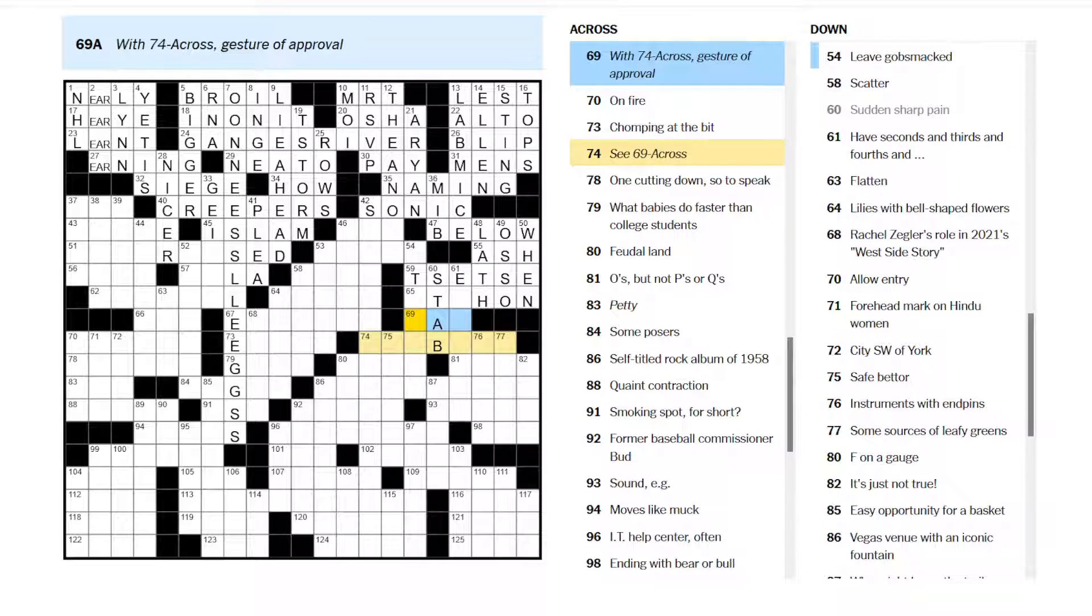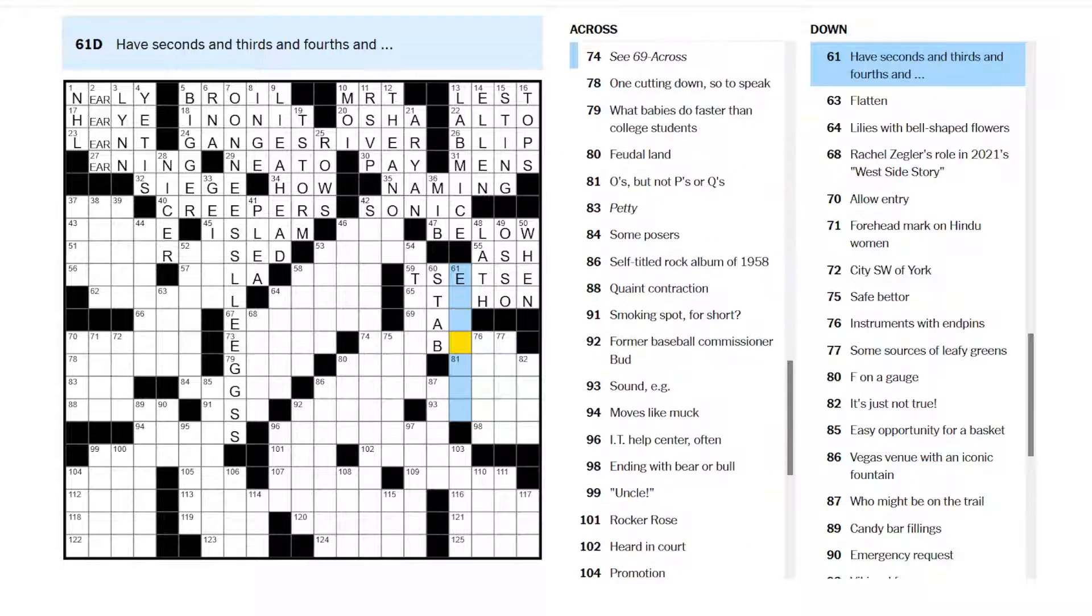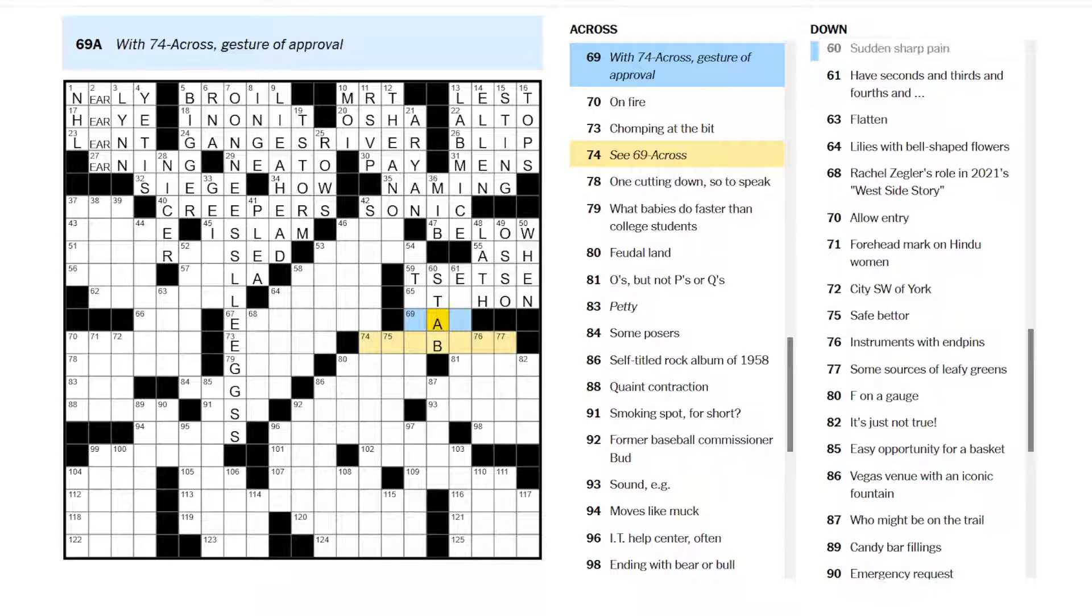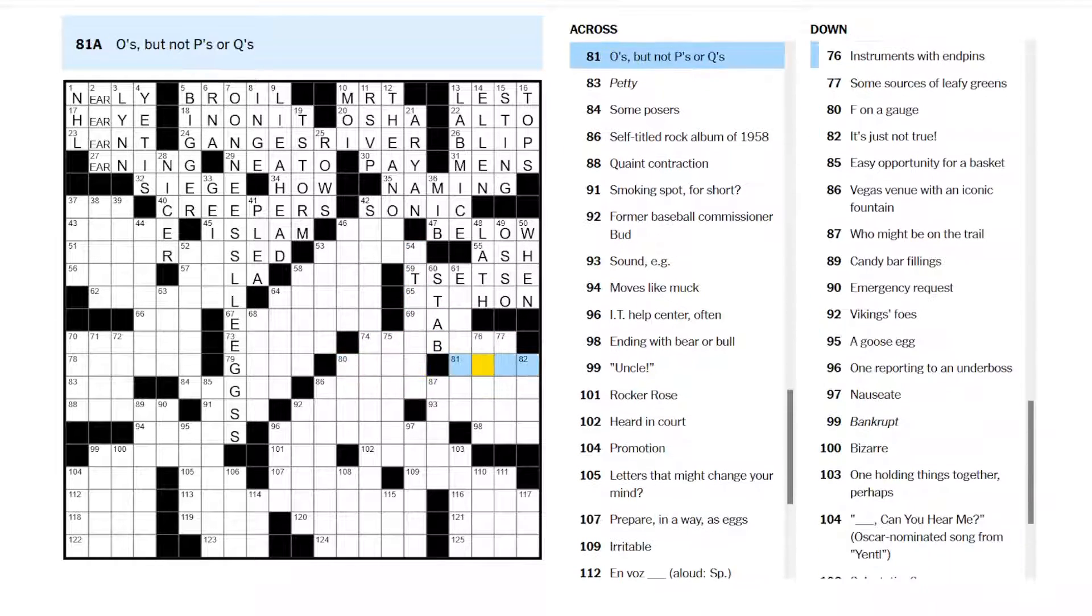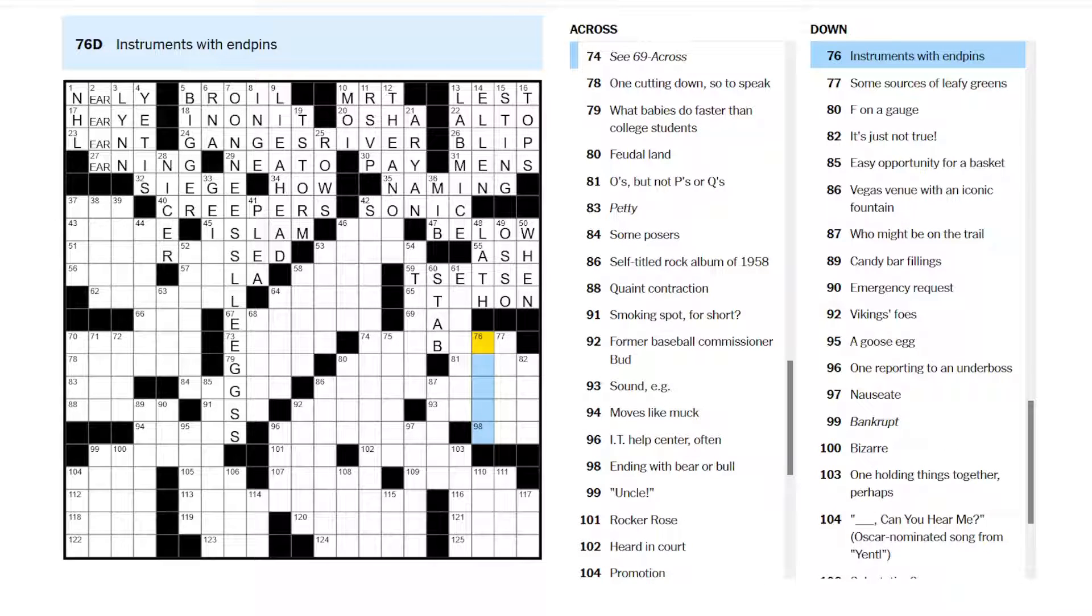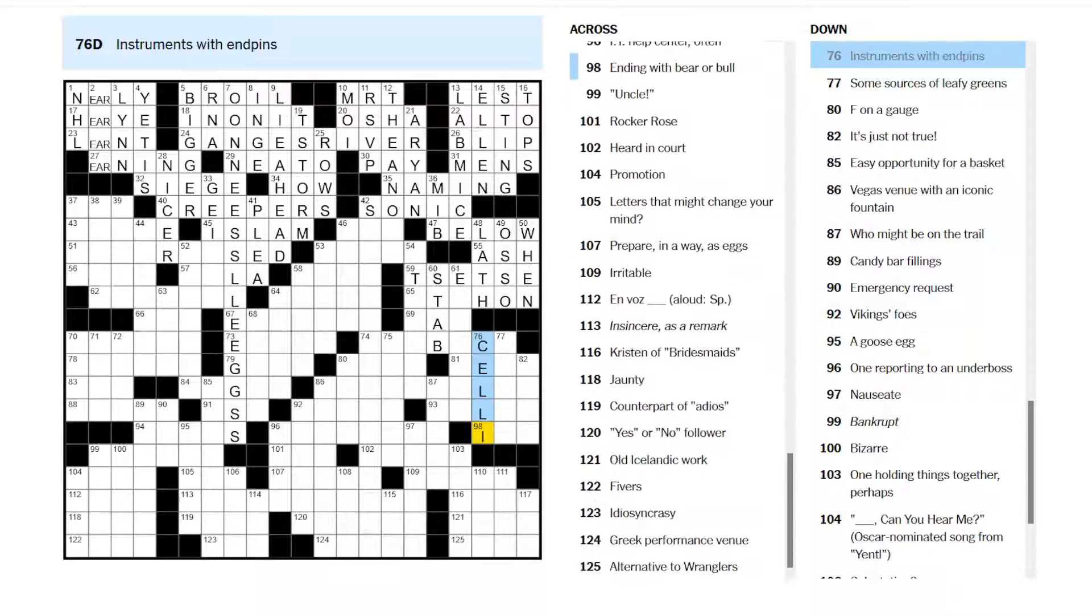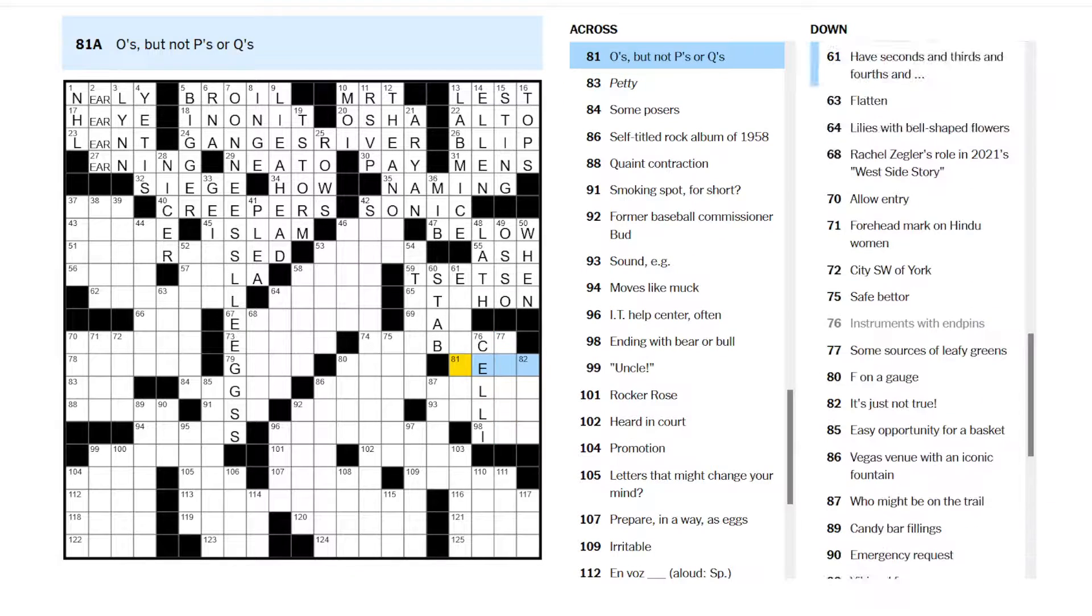With 74 across. Gesture of approval. Ah. This is a theme one because it's italicized. And it's going to be like something over something. Or something on something. A gesture of approval. It's a nod of approval. It's a shake of your head. Not sure. Instruments with end pins. Celli, I think, have those pins that they kind of rest them on the ground with. Some sources of leafy greens. O's, but not P's or Q's.